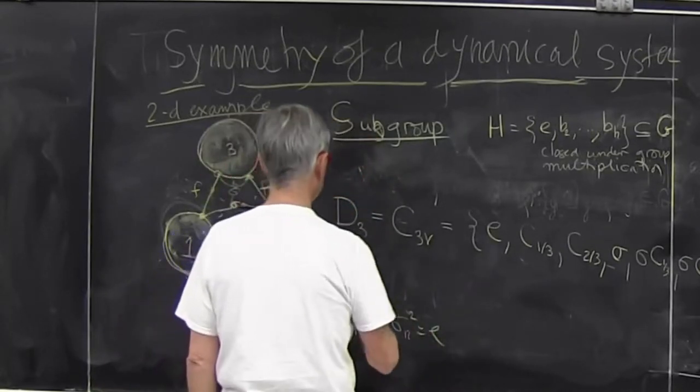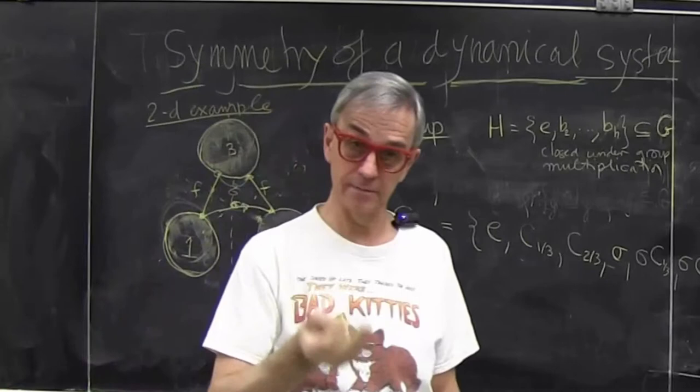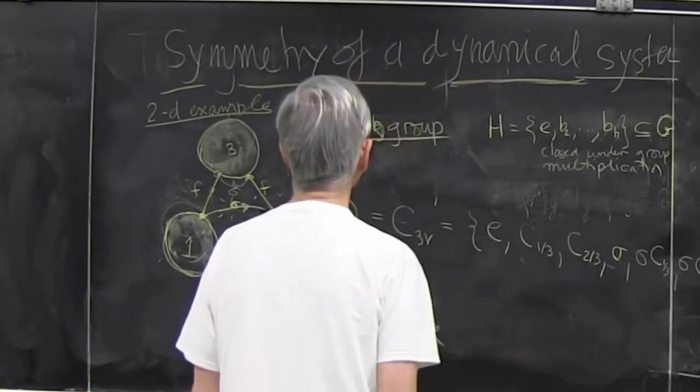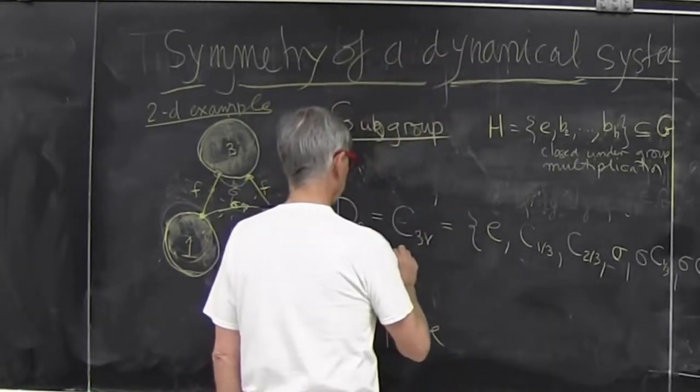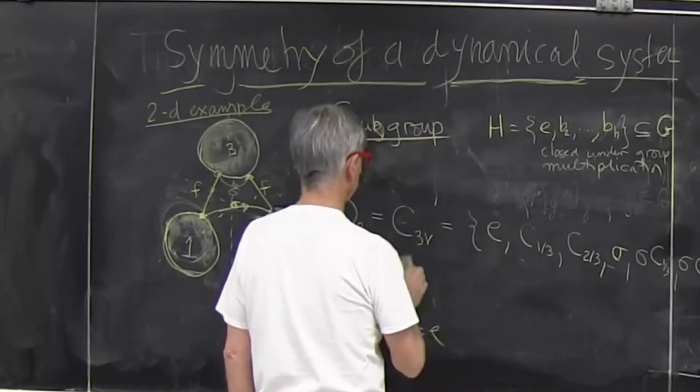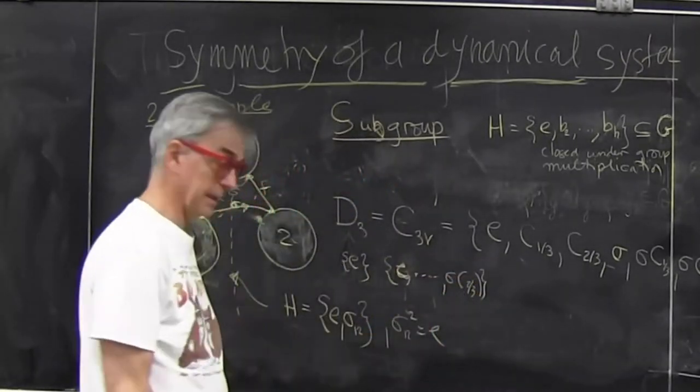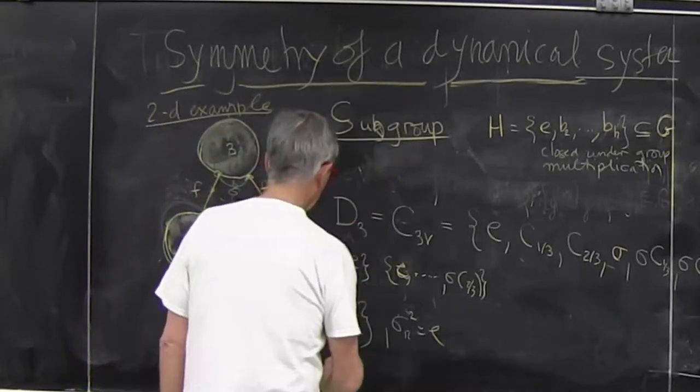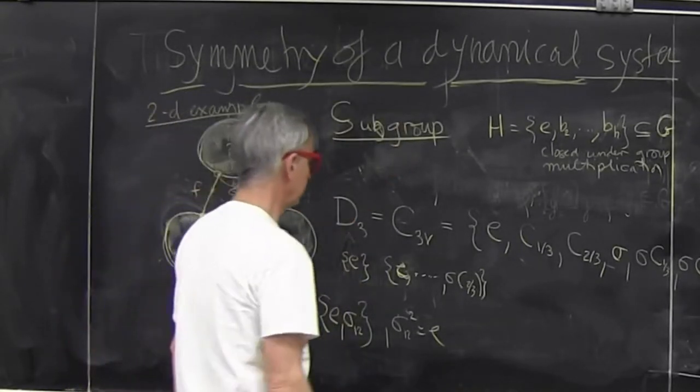First of all, there's always a trivial group. Identity applied to identity. And of course, the group itself is a subgroup. So that's always true, the identity in itself. I have here an example of group of order two.